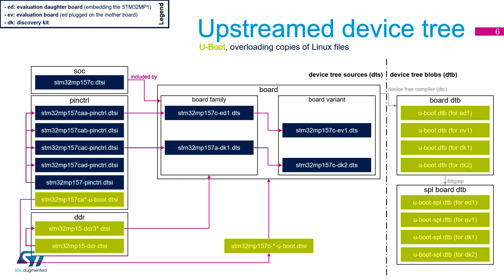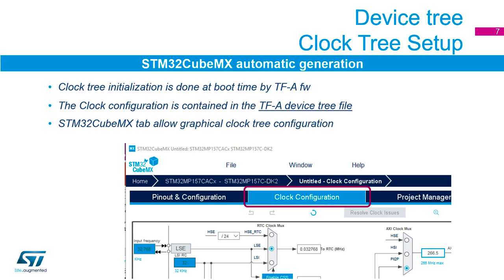You'll get a device tree blob file for each of the four boards. For U-Boot, there will be a dedicated source include, and if you're using U-Boot SPL you'll also need the DDR source includes for the SPL board U-Boot. Again, it generates one for each of those four boards — a standard U-Boot file and an SPL U-Boot file. The clock tree is configured by the TFA at boot time and goes into the TFA device tree.